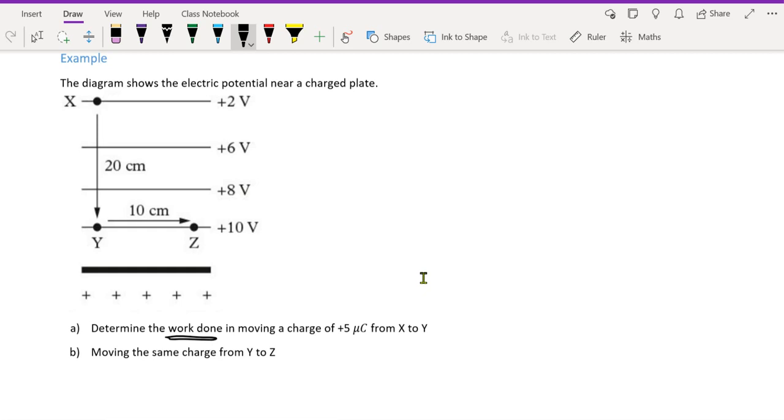So the work done is given by which of these three? Delta U. Delta U. So delta U rearranging using algebra is the potential difference times Q. What's the potential difference from X to Y? 2 to 10. Very good. So it's the final minus the initial.